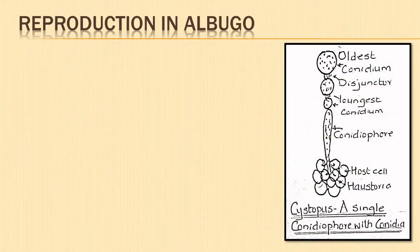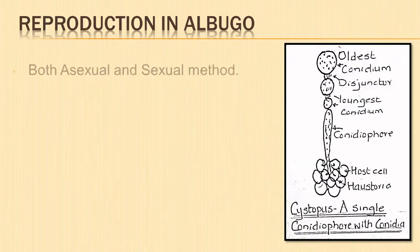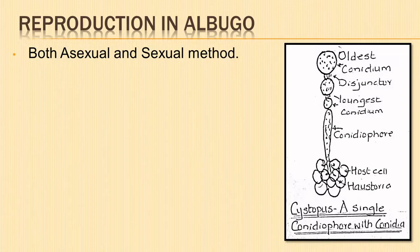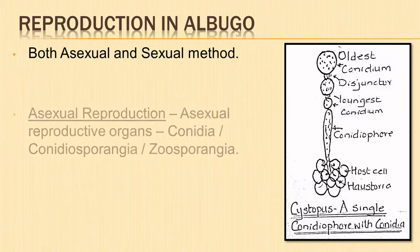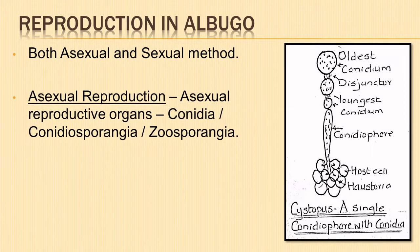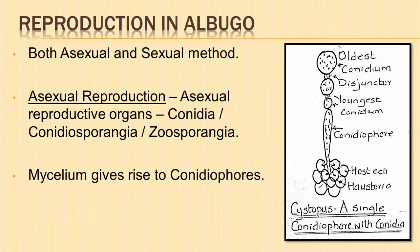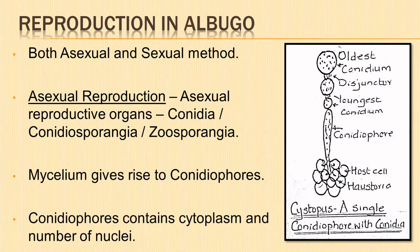The fungus reproduces both asexually as well as sexually. The asexual reproductive organs are known as conidia, conidiosporangia, or zoosporangia. The mycelium beneath the epidermis of the stem or leaf forms dense masses of hyphae, which give rise to many erect, unbranched, club-shaped structures called conidiophores. They contain cytoplasm and a number of nuclei.